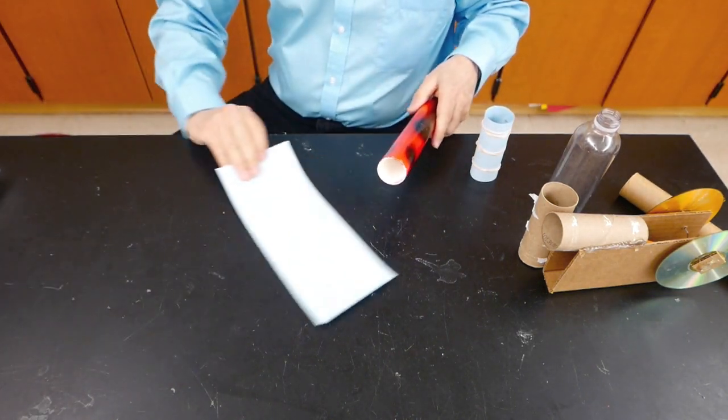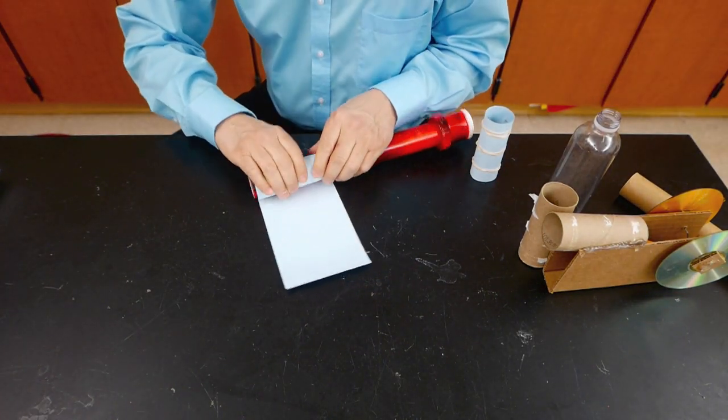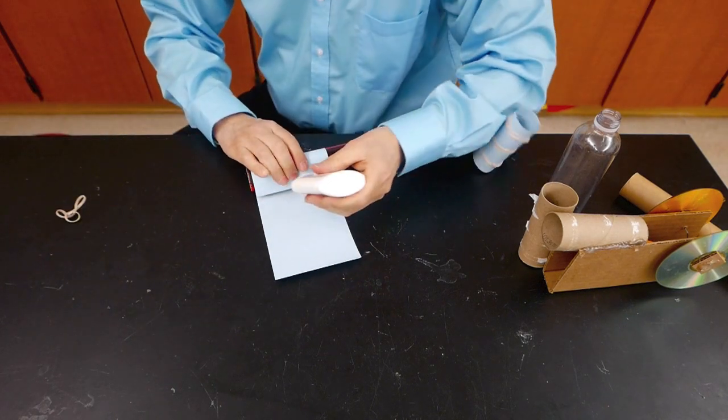We find a small tube that's the appropriate size, cut out a piece of paper, start rolling it, put a little bit of glue on it.